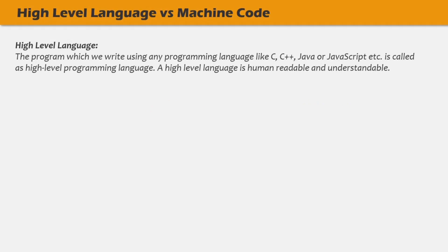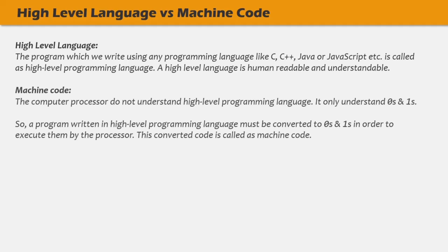The programs which we write using any programming language like C, Java, C++, JavaScript, etc. are called high-level programming languages. A high-level language is human-readable and understandable by humans. But when we run these programs in a computer, the computer does not understand high-level programming languages like C++ or JavaScript. Computers only understand 0s and 1s, which is called low-level language or machine code. So ultimately, all programs must be converted from high-level language to 0s and 1s in order to execute, and the converted code is called machine code.